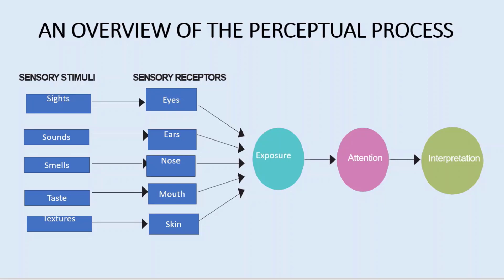There are two main aspects of the perceptual process: sensory stimuli and sensory receptors. Sensory stimuli are tools used by marketers, and sensory receptors are the human feelings that receive the stimuli. The sight receptor is the eye, sound receptor is the ears, smell receptor is the nose, taste receptor is the mouth, and texture receptor is the skin.